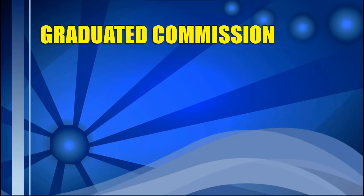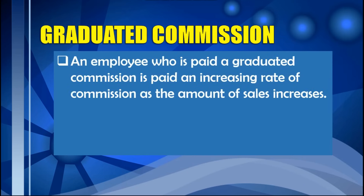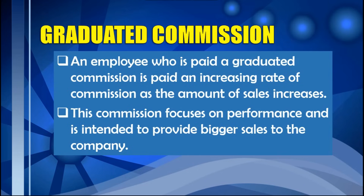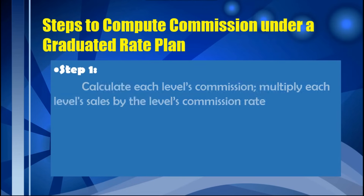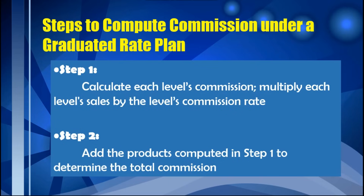The last type of commission is graduated commission. An employee paid a graduated commission receives an increasing rate of commission as the amount of sales increases. This commission focuses on performance and is intended to motivate employees to achieve higher revenue. To compute: Step 1 — calculate each level's commission by multiplying each level's sales by that level's commission rate. Step 2 — add all the products to determine total commission.